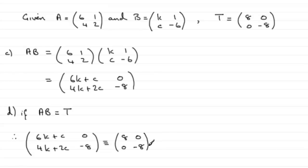So if that's the case, you can see that the 0 matches up, the minus 8 matches up here. It just means that 6K plus C must be equivalent to the 8, and 4K plus 2C must be the 0. So let's come down here and we'll finish this off.